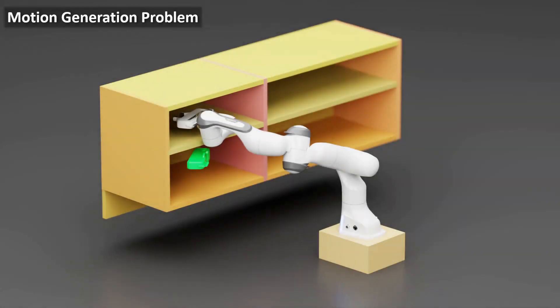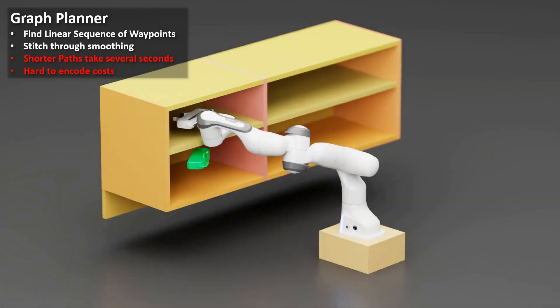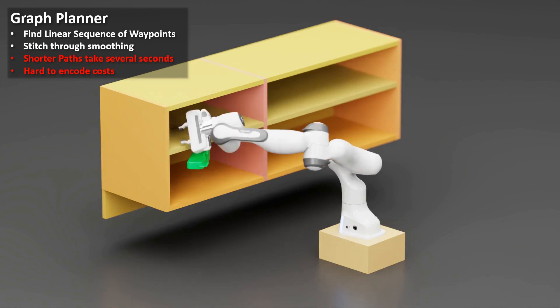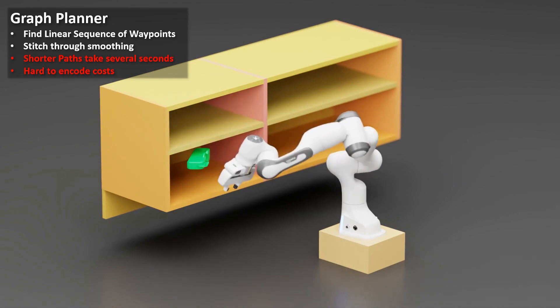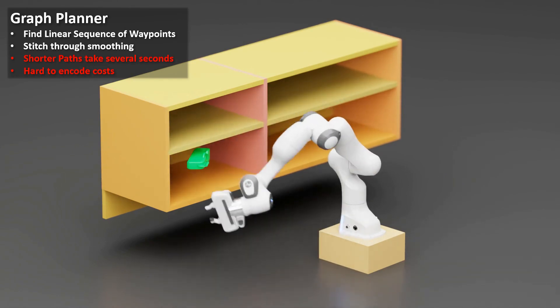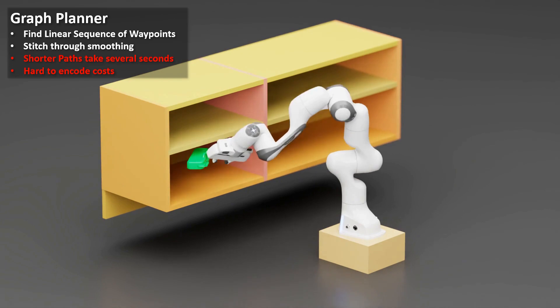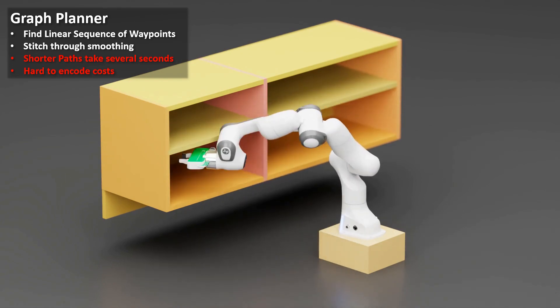The motion generation problem can be defined as generating a trajectory that moves the robot from the start state to the desired end effector pose, which is shown here by the green marker. One way to generate motions is with a graph planner, which builds a graph of nodes connected by collision-free edges that go from the start configuration to the goal configuration. Building and searching in a graph is a well-studied problem beyond robotics, and there are several robotics-focused planners such as RRT and Bitstar.